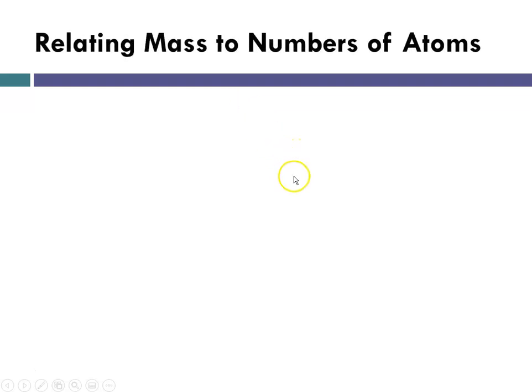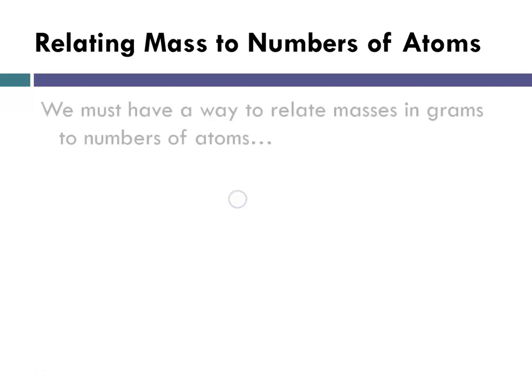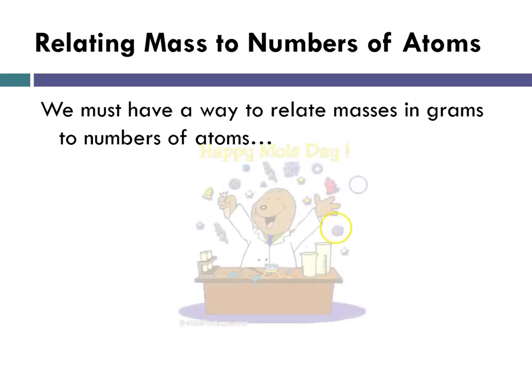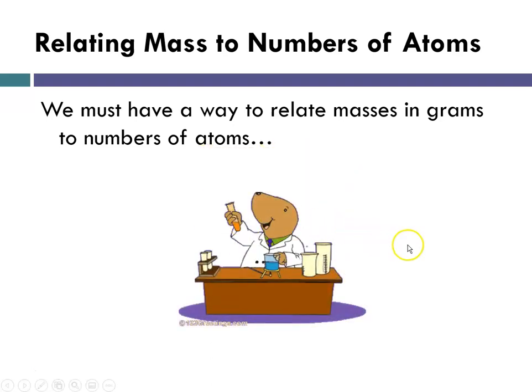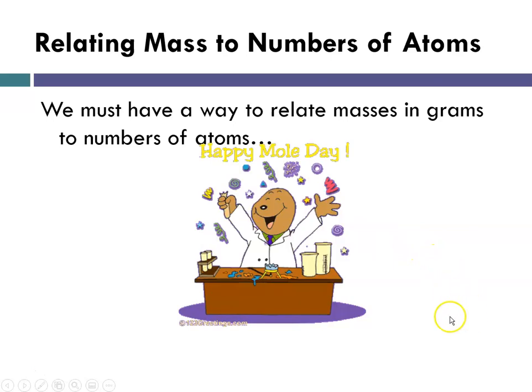So we have to have a way to relate mass to number of atoms. The reason is, in order to do anything in chemistry, you're going to be able to measure things. And how do you know that you're measuring the right amount? So we must have a way that relates mass in grams to the number of atoms. Because in a reaction, you're going to want to know that you have the right amount of x and y to make the reaction take place. And so this is where we talk about the concept of the mole.